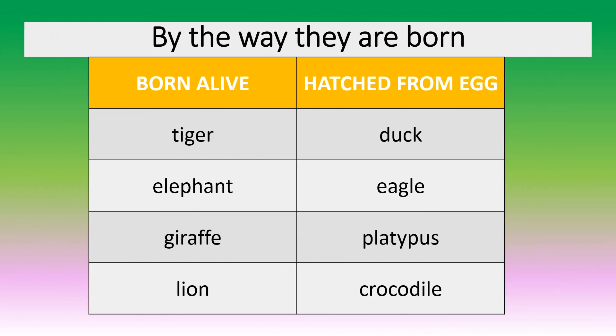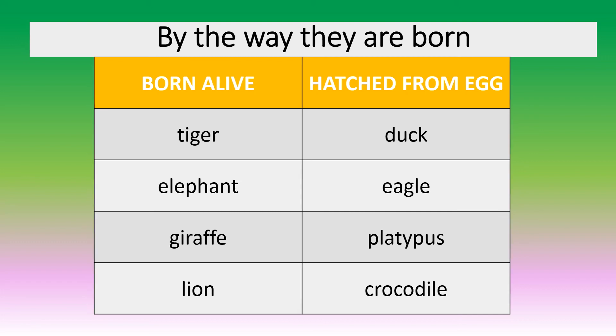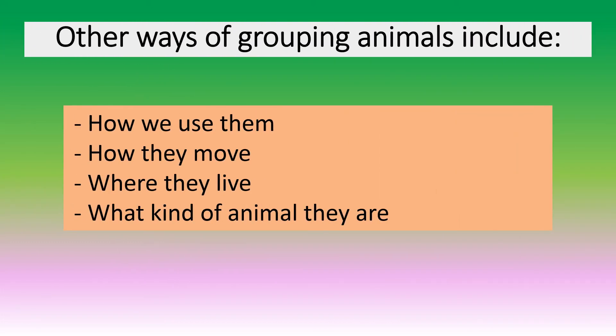Another way of grouping animals is by the way they are born. They can be born alive or they could be hatched from an egg. Other ways of grouping animals include how we use them, how they move, where they live, what kind of animal they are, or what they eat.